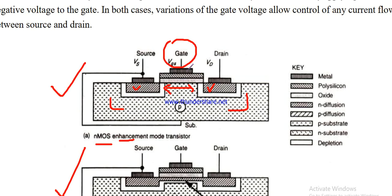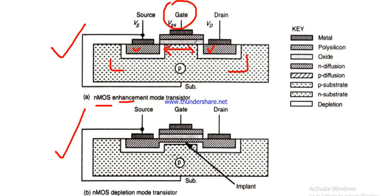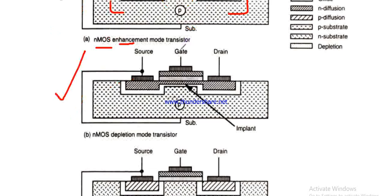The voltage input is applied to the gate. The gate signal controls the enhancement type device. When the gate voltage is applied, the enhancement type NMOS responds accordingly.